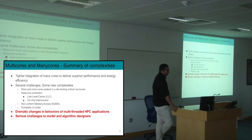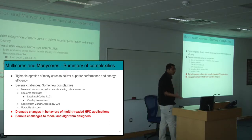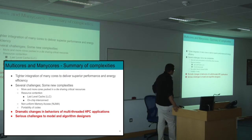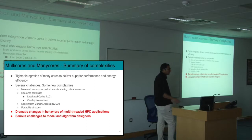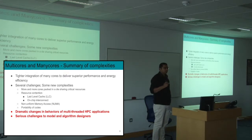To summarize the complexities: tighter integration of many cores delivers superior performance and energy efficiency, but there are several new challenges and resource contentions. In the case of Haswell, the last-level cache is the bottleneck along with the on-chip interconnect. In the case of many-core Xeon Phi processors, you have the bi-directional ring. There's also the challenge of non-uniform memory access. Because of this serious contention from tighter integration, the behaviors and profiles of multi-threaded HPC applications have shown dramatic changes.